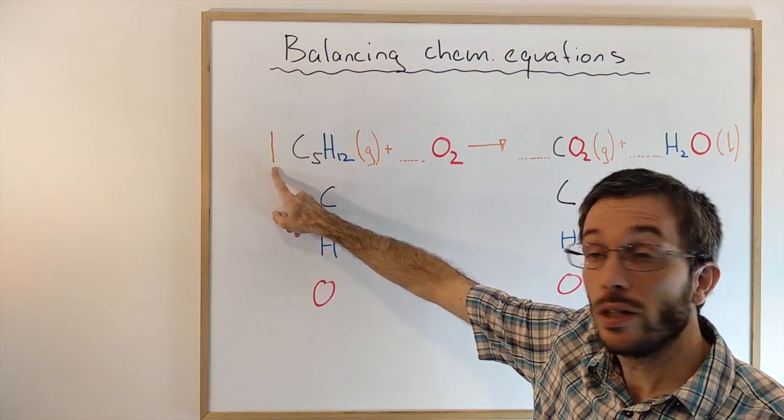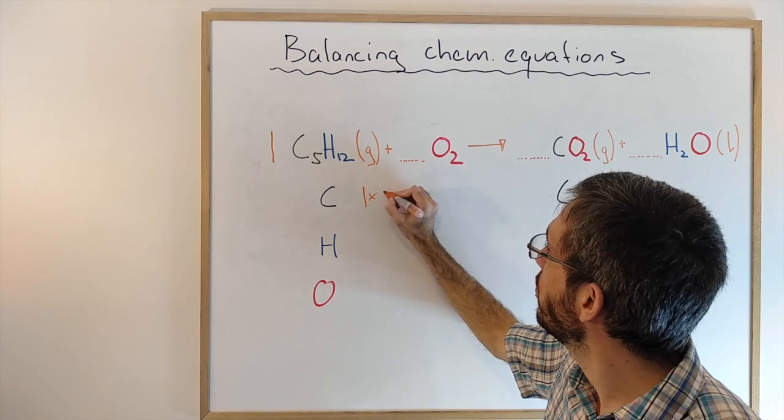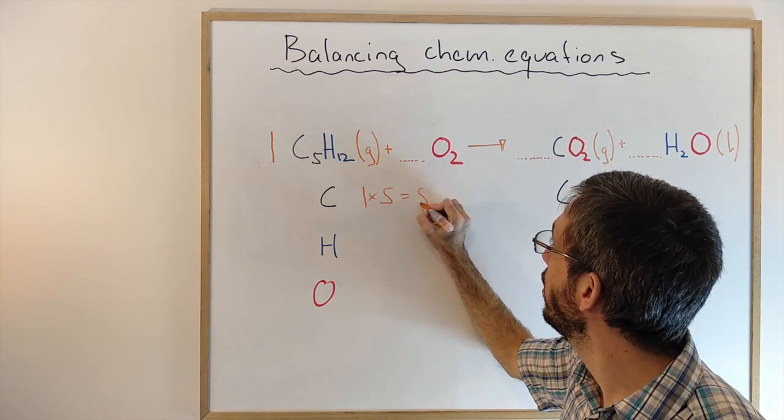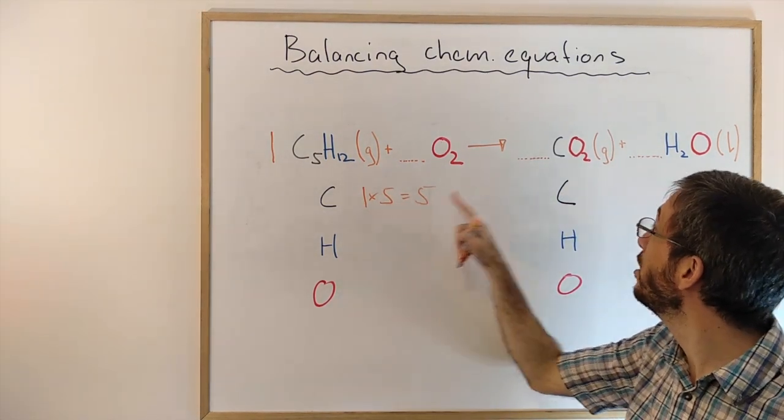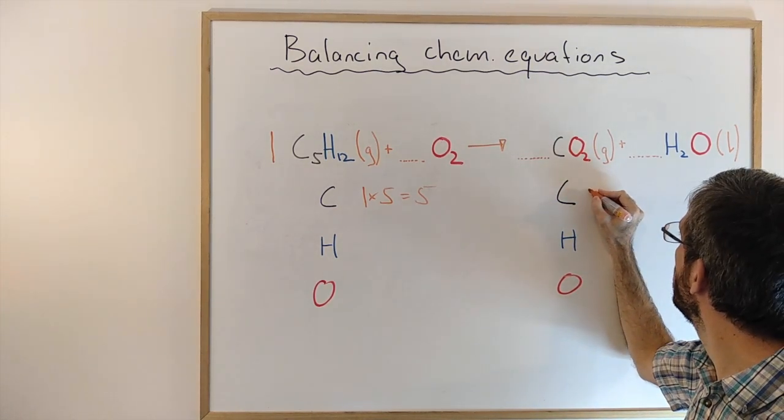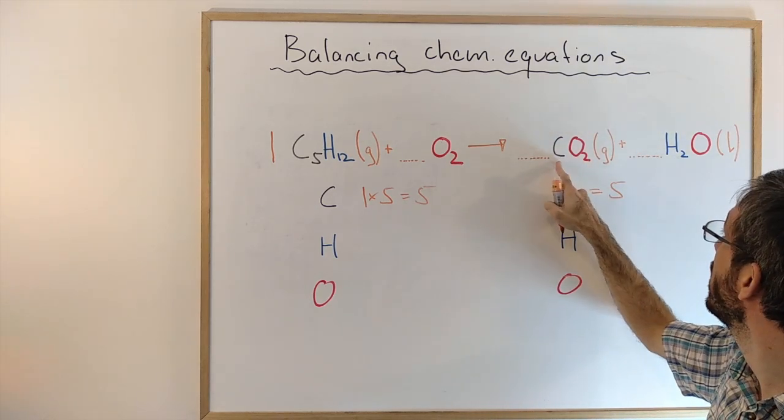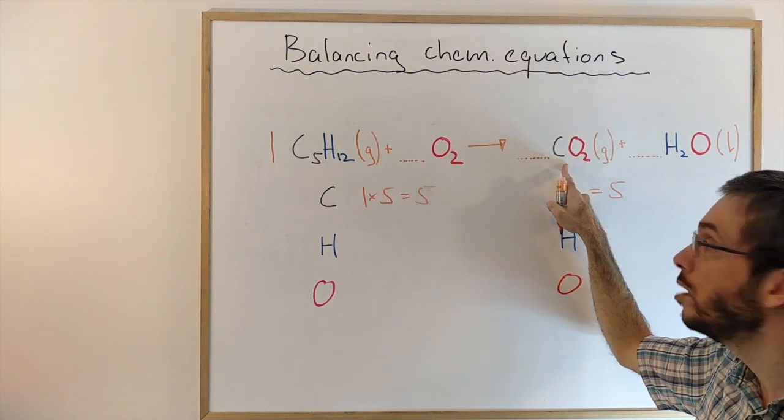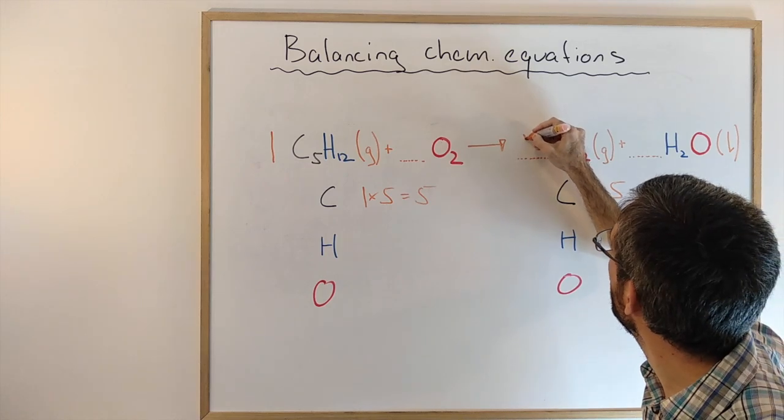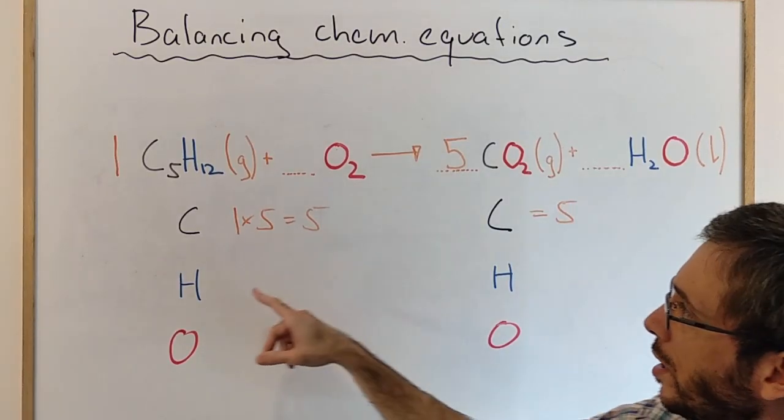Here I have 1 times C₅. That means I have 1 times 5 equals 5 carbon on the left, meaning I need to have 5 carbon on the right. I know this one has to be 5. There is no other molecule with carbon inside, so we have C1, so this one must be 5.